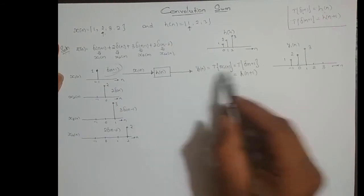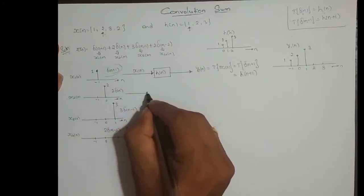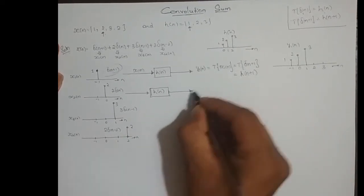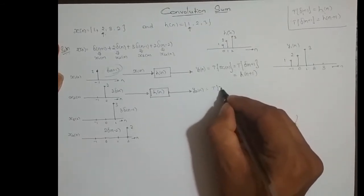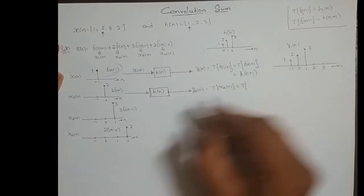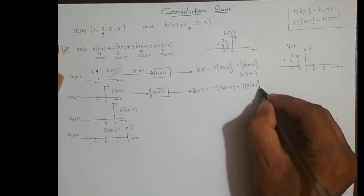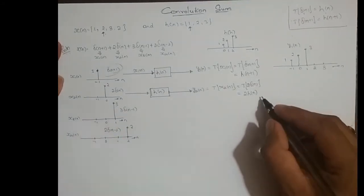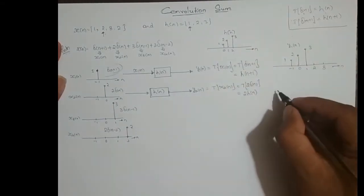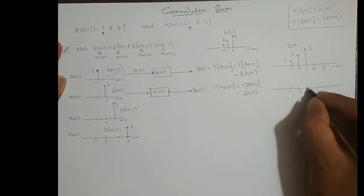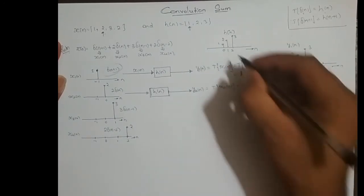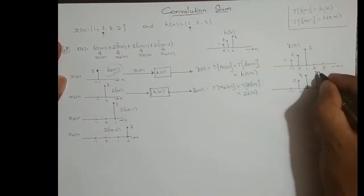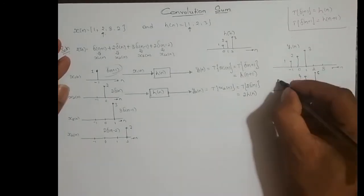Now I feed the next input x2(n) to the same system h(n) to get output y2(n), which equals the transformation of x2(n) = 2δ(n). The transformation of 2δ(n) is nothing but 2h(n). So if I know h(n), I scale the amplitude by a factor of 2. At n=0 the value is 1, scaled to 2; at n=1 the value is 2, scaled to 4; at n=2 the value is 3, scaled to 6. This is y2(n).